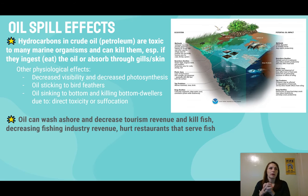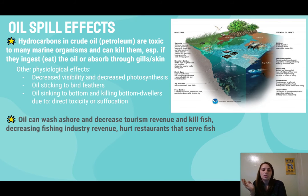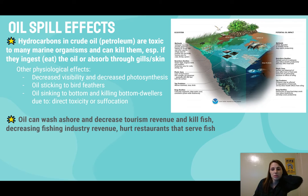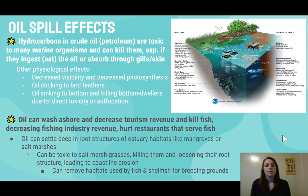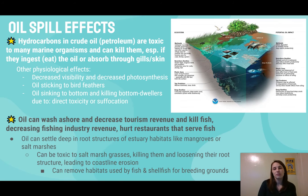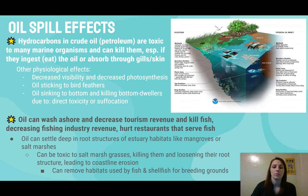On the financial side, oil can wash ashore and decrease tourism revenue because nobody wants to be on an oily beach. It also kills fish, decreasing fishing industry revenue and hurting restaurants that serve fish. So it's bad for ecosystems and for the humans who rely on those ecosystems for their services. Oil can also settle deep into root structures of estuary habitats like mangroves or salt marshes, be toxic to salt marsh grasses, and loosen root structures leading to coastline erosion — removing habitats used by fish and shellfish for breeding grounds.